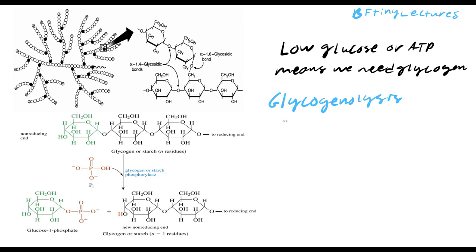Glycogenolysis is not a simple hydrolysis reaction as it is in starches. In plants, they use water to cut down molecules and release sugars. But in animal cells — such as chihuahuas or pigs — they don't use water; they actually use phosphates. This different reaction is called phosphorolysis.